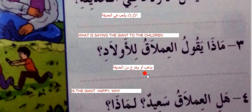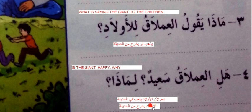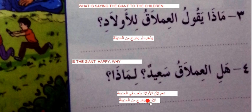Hal al-imlaq saeed — is the giant happy? Limaza — why? The answer: naam, li'anna al-awlad abu fi al-hadiqa — yes, because the children are playing in the garden. Or, if he said 'go out,' the answer could be: the children went out from the garden. So this page is finished.